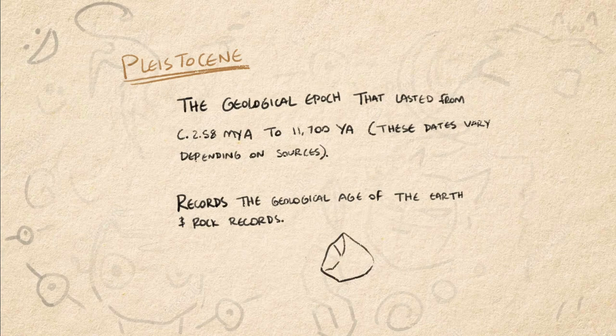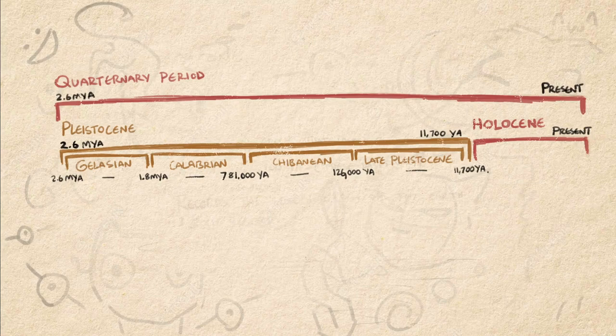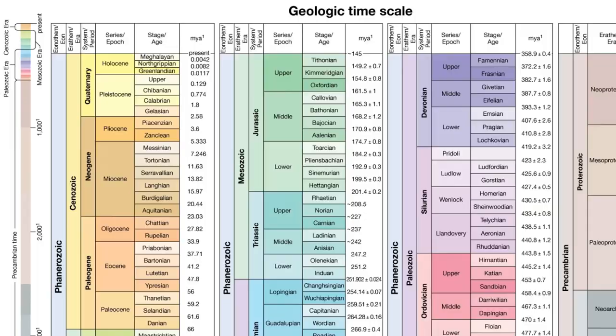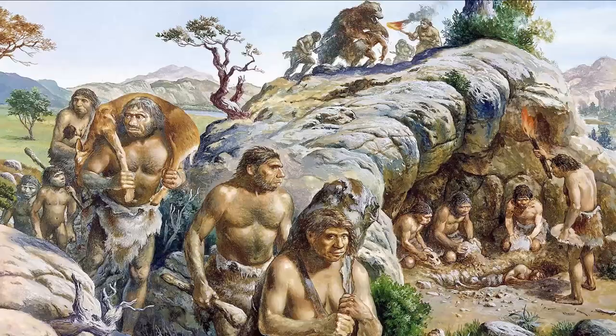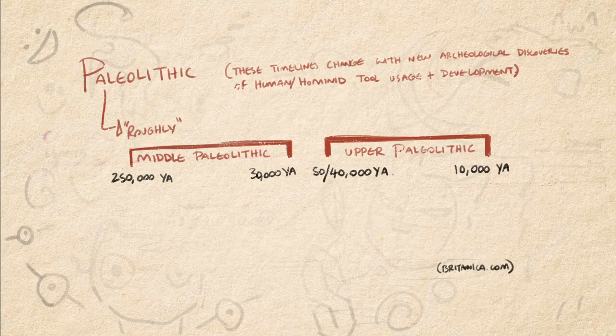The Pleistocene Epoch is the latest section of the Quaternary Period, which itself is the latest section of the Cenozoic Era — but we can just leave it there, it's a bit of a Russian nesting doll situation. Meanwhile, the Paleolithic Period records the time of early hominid development, beginning from the first evidence of tool usage around 2.58 million years ago to the Agricultural Epoch 11,700 years ago. Isn't it neat how correlated those two timelines are?